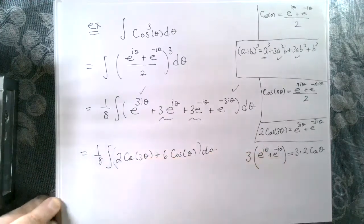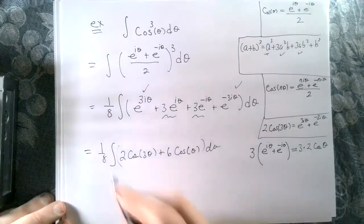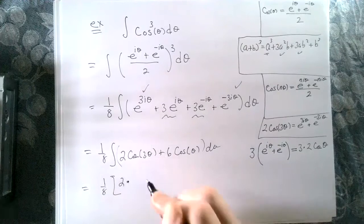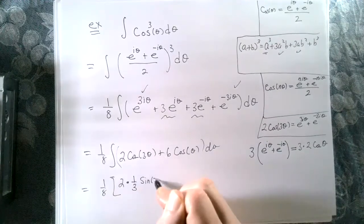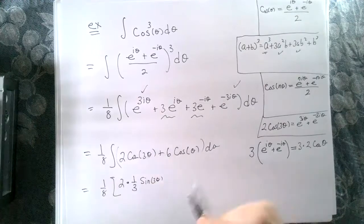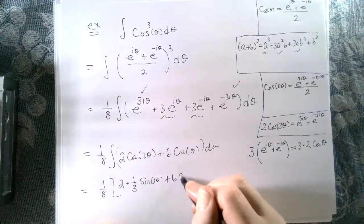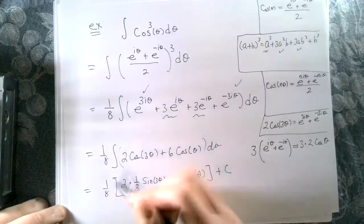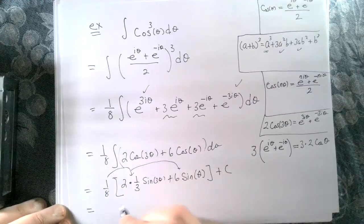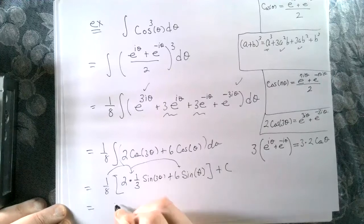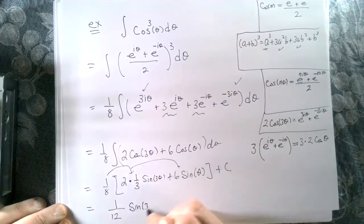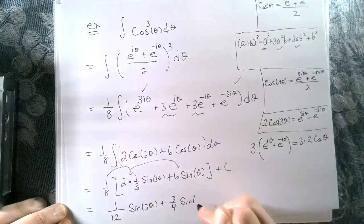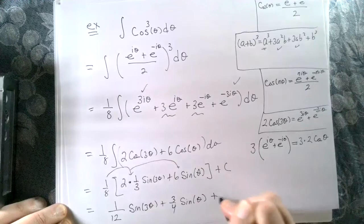And that's pretty easy to integrate with respect to theta. So we have one eighth times: two times one third sine of three theta — since the anti-derivative of cosine is sine — plus six sine of theta, plus C. Distributing the eighth and reducing: that's one twelfth sine of three theta plus three fourths sine of theta plus C.